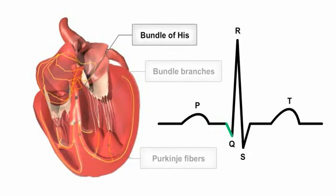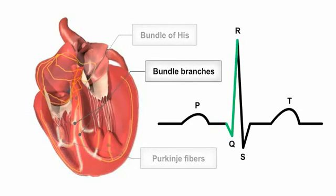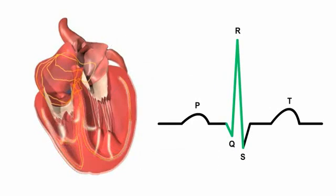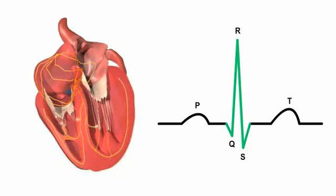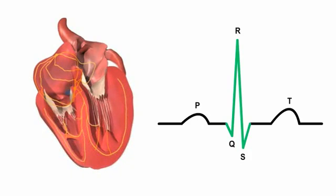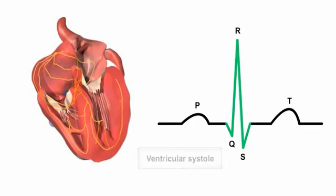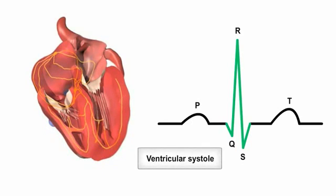It enters the bundle of His and spreads through the bundle branches and the large diameter Purkinje fibers along the ventricle walls. As the signal spreads through the ventricles, the contractile fibers depolarize and contract very rapidly, inducing ventricular systole. The ECG's QRS complex represents this rapid ventricular depolarization.